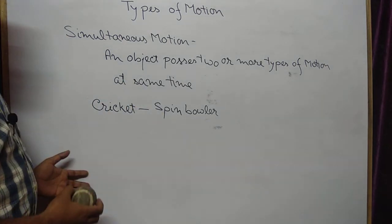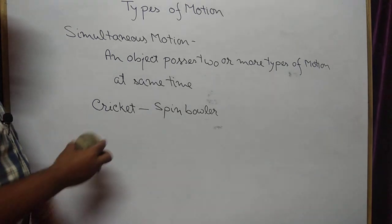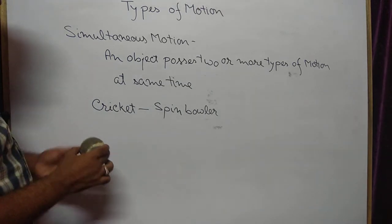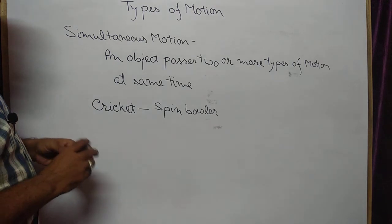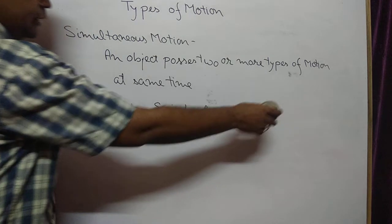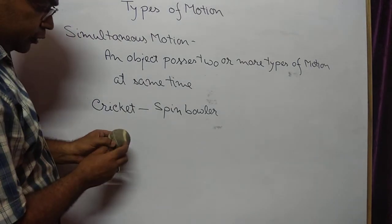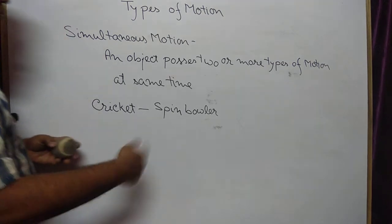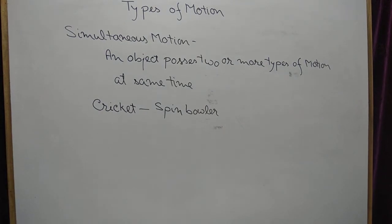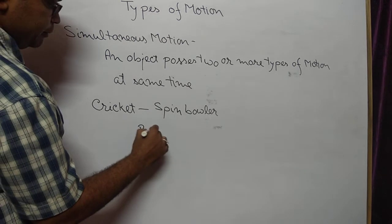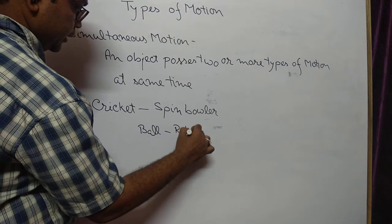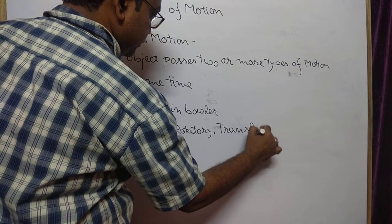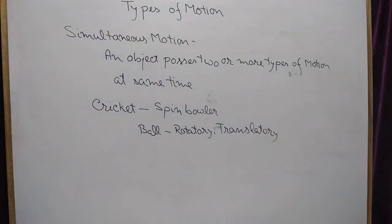This makes it harder for the batsman to tackle the spin bowling. So in spin bowling, the cricket ball performs two types of motion: one is translatory motion — moving directly towards the batsman — and the other is rotatory motion — rotating on its own fixed axis. These types are known as simultaneous motion.